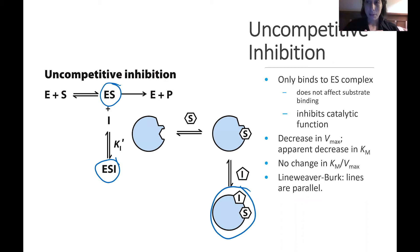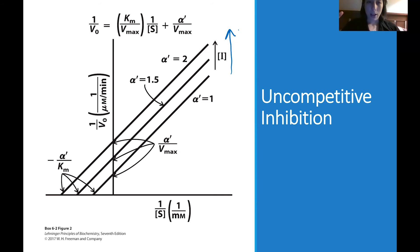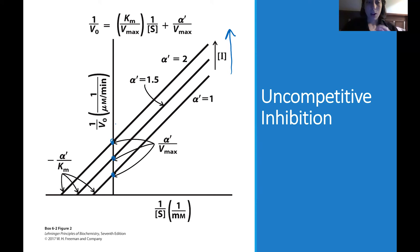Uncompetitive inhibition decreases the Vmax, and you also get a decrease in Km. Because you're decreasing both, the slope of the line doesn't change, so what you'll see is parallel lines — similar to what we saw with two substrates in a ping-pong mechanism. As we increase the concentration of inhibitor, these lines go up. Notice they're all parallel and do not intersect with each other. They all have their own Vmax — Vmax is changing, that's the intersection point along the Y-axis — and they all have their own Km, which is also changing.